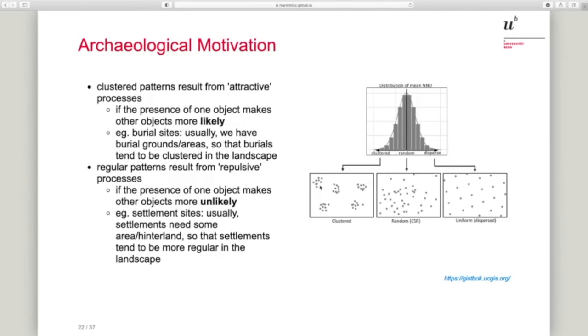I will not go too much into detail here. We had that already in the course. Just very short: clustered patterns usually result from attractive processes where the presence of one object attracts other objects. For example, at burial sites, we usually have burial grounds, so a lot of burials tend to be clustered in the landscape.